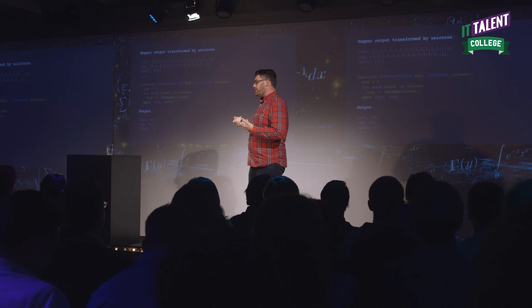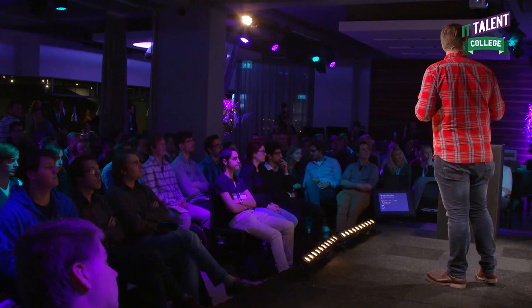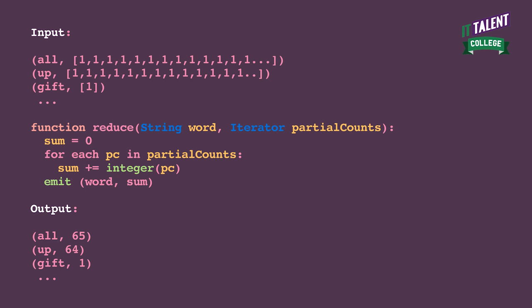In the reduce function we get a key and an iterator of values — it says 'string key' and 'iterator values' here. We create a local variable for the sum, then we loop through and exhaust the iterator. In this case, since they're strings, we have to cast to an integer. We add it to the sum, then emit the key and the sum. So the output from the reduce function is, for example: 'all, 65', 'up, 64', 'gift, 1', et cetera.